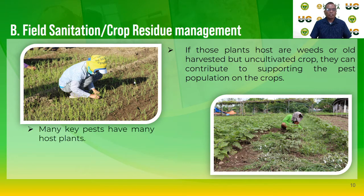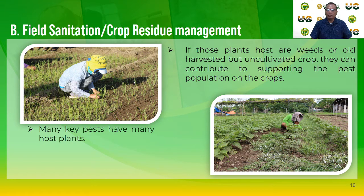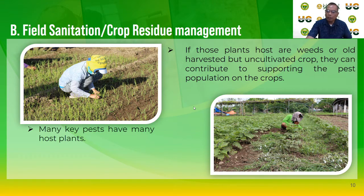Another avoidance technique is field sanitation or crop residue management. Many key pests have many host plants, and if those host plants are weeds or old unharvested crops, they can support pest populations. Reducing or removing crop residues and alternative host sites can control some insects and many diseases. Incorporating residue into the soil hastens destruction of disease pathogens by beneficial fungi and bacteria, and also reduces the movement of spores by wind. Controlling weeds, particularly flowering weeds, is crucial for successful management.